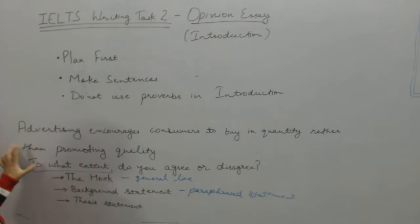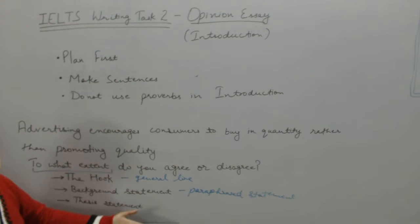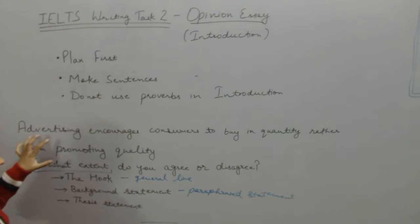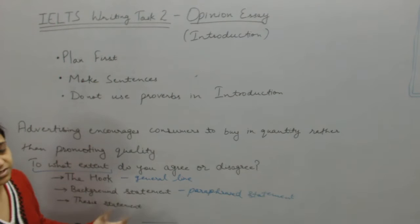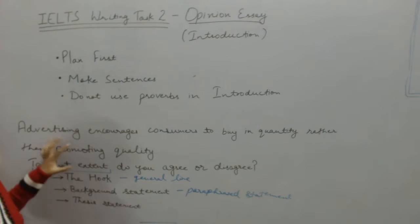You cannot copy the whole sentence from the question. If you copy the whole sentence, you will not get good band scores, because it only shows what is written in the question. You have to show how well you understand the question. For example, 'advertising' can be replaced with 'adverts', 'encourages' can be replaced with 'persuades', 'consumers' can be replaced with 'customers' or 'potential consumers'. So you have to show your vocabulary range.